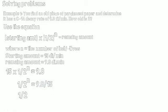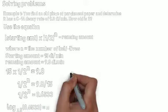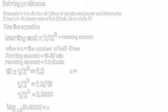So 1/2 to the n is going to be equal to 9.8 divided by 15. We divide both sides by 15. 1/2 to the n power is going to equal 0.6533. So now, we're going to turn this into a logarithmic expression, like I showed you in that first half-life video. Log of 0.5, base 0.5 of 0.6533 equals n.